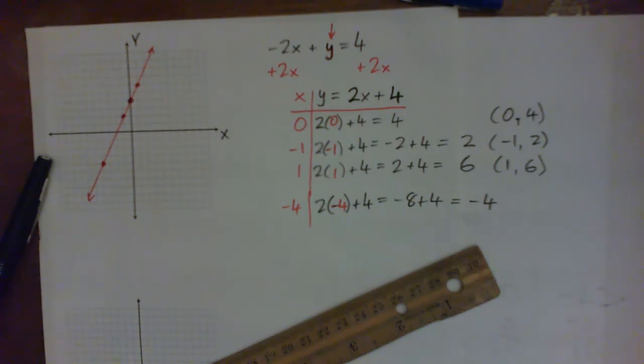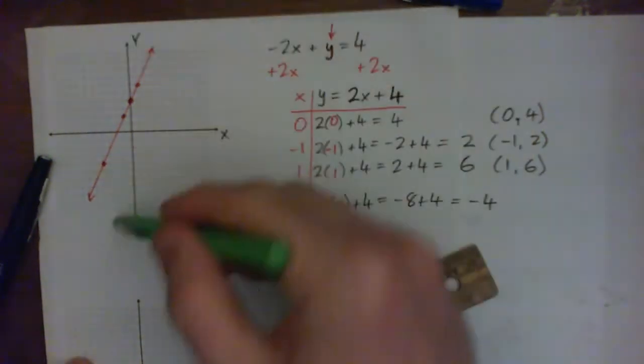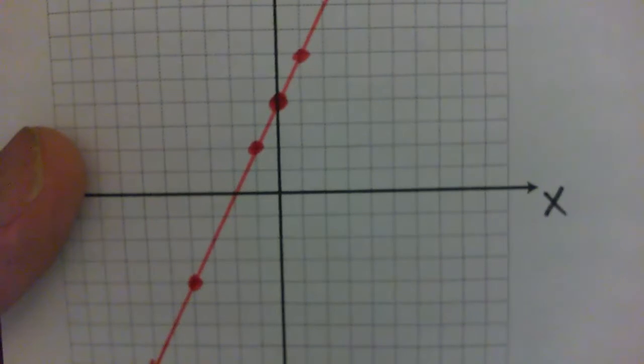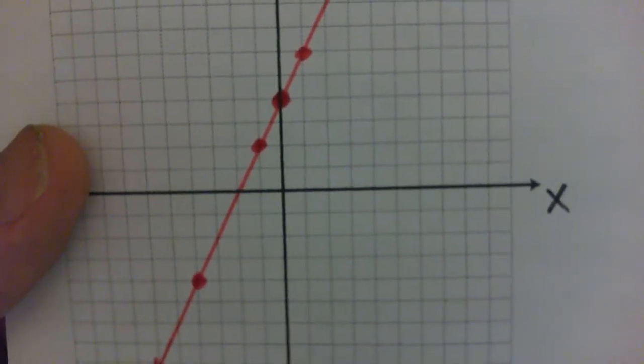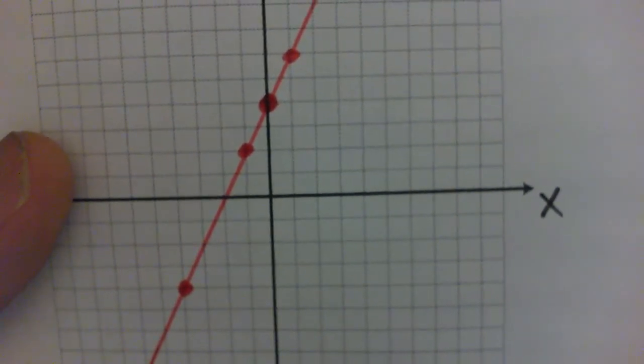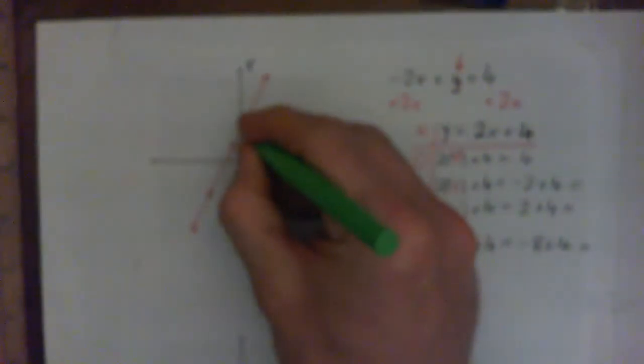So there's two things I want you all to see on this graph. One is the y-intercept, and the other is the slope. So the y-intercept, we'll start with that. That's just where the line hits the y-axis. Can we all see where it hits the y-axis? At 0, 4, or at 4 units up on the y-axis. The y-intercept is 4, because it's 4 units up.